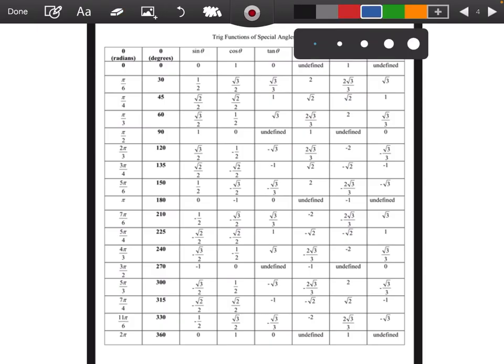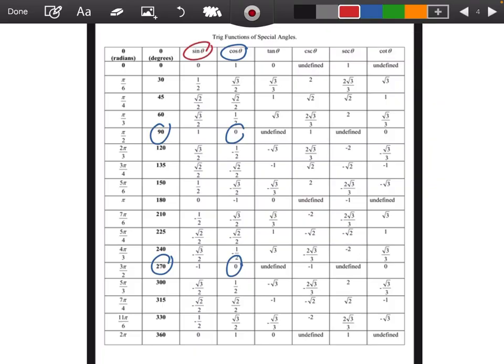When is the cosine equal to 0? The cosine is equal to 0 at 90 degrees, as well as 270. And when is the sine equal to 1 half? At 30 degrees, as well as 150 degrees.